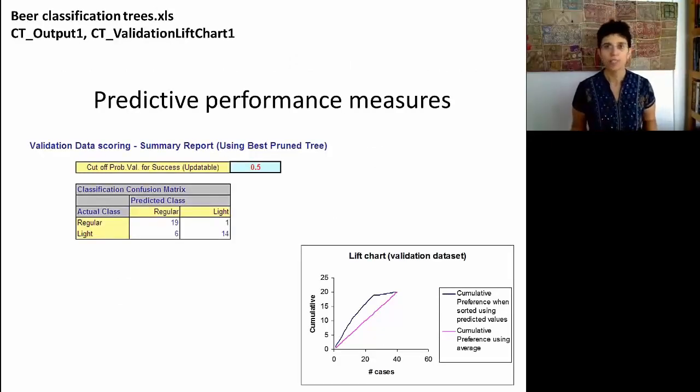We can evaluate the performance of trees in the ordinary way by looking at confusion matrices if we're trying to classify, or if we're trying to rank we can generate lift charts. Obviously we would not want both of them in the same case because each one depends on your objective.